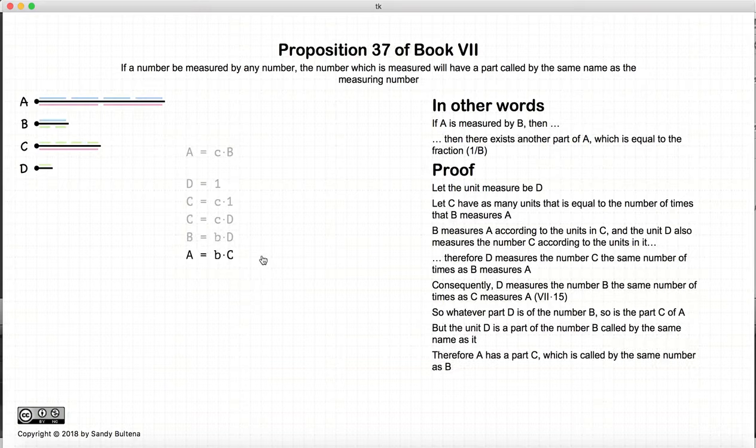So therefore, a has a part c which is called by the same number as b. And thus we have shown that if b measures a, then there can be another part c which is a fraction one-bth of a. And that is this proposition.